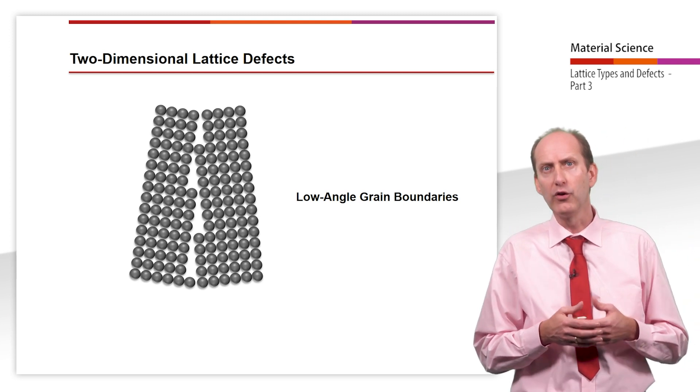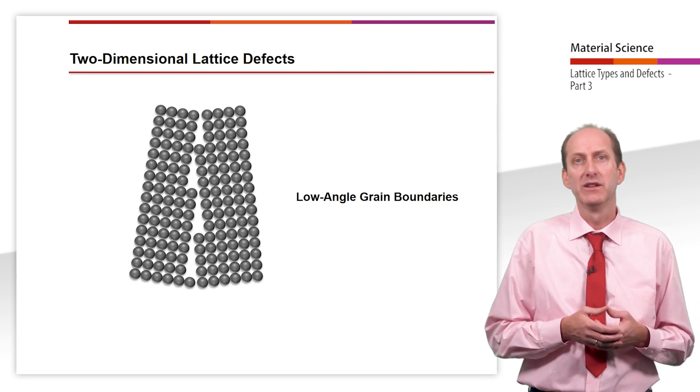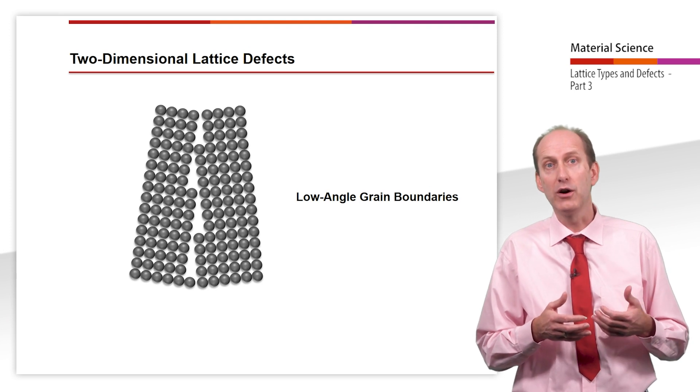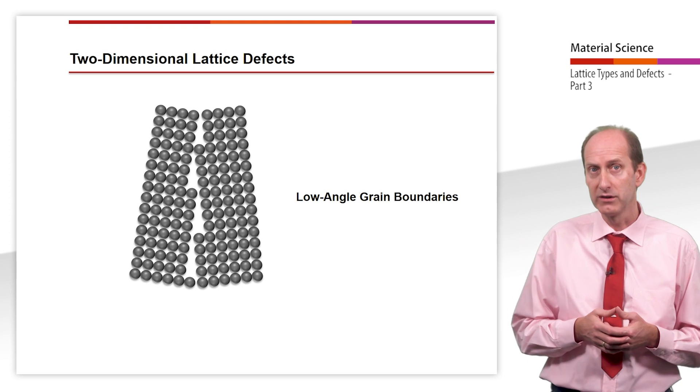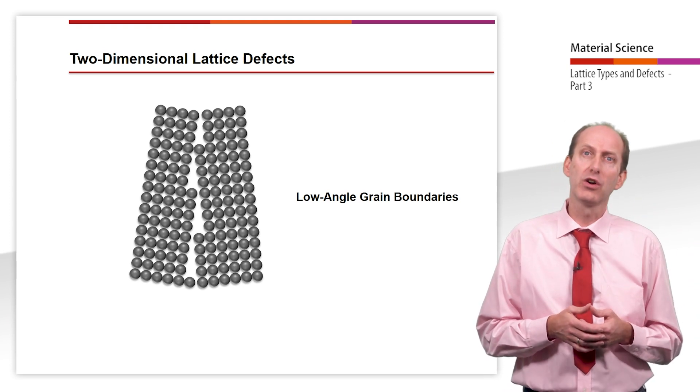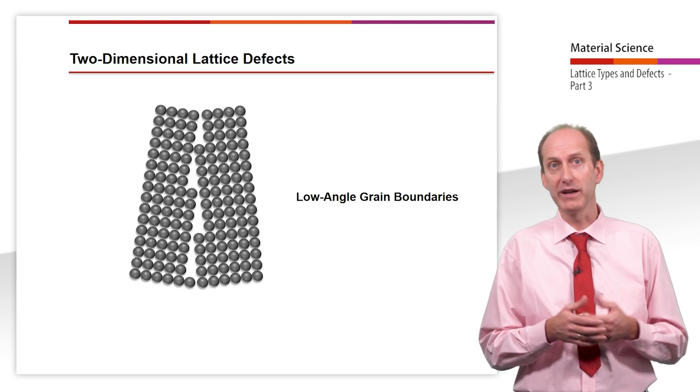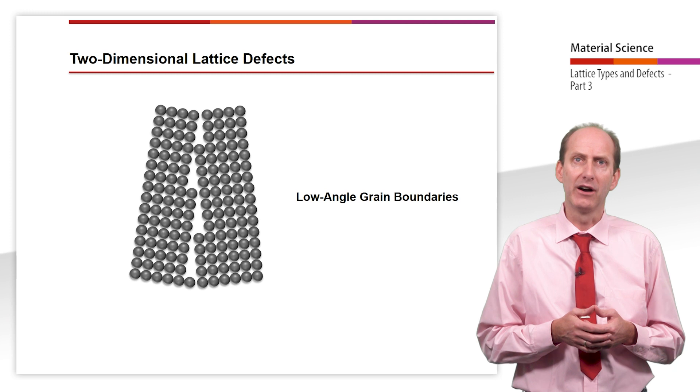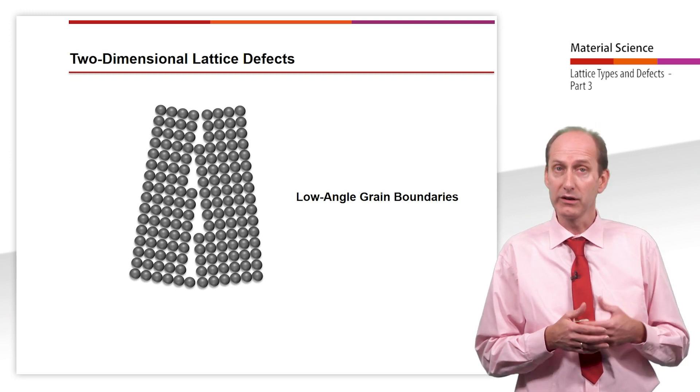Since the force of dislocations also mutually interfere with each other, this can lead to a chain of edge dislocations, which result in a two-dimensional lattice defect. In such cases, we talk about low angle grain boundaries, since lattice planes result that are only tilted less than 50 degree relative to each other.